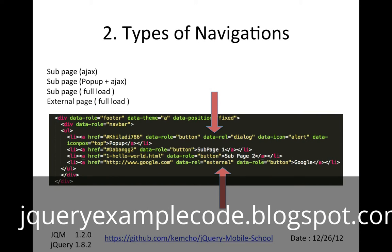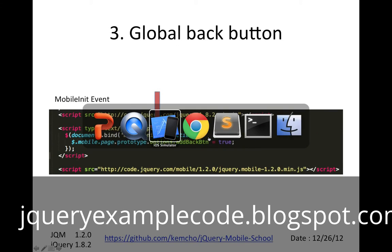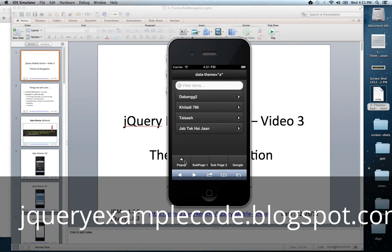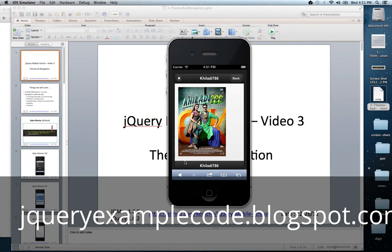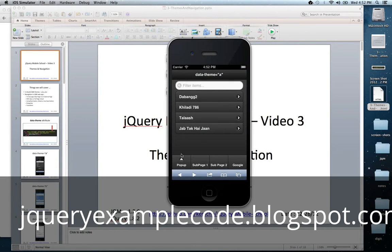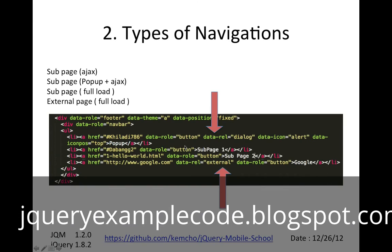There are different kinds of pages you can navigate to. The first example is a dialog pop-up. You can see there's a pop-up with an X close button that does a reverse transition. That's an example of a pop-up — a page within your page using a dialog. This uses Ajax by default.